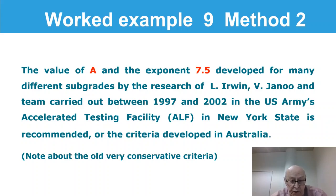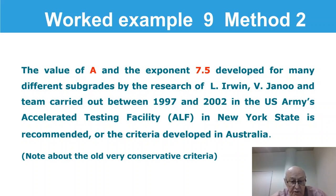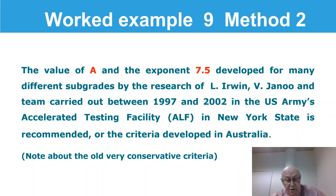The reason the AASHTO criteria is conservative is not difficult to understand. The road test took place in a part of America where the subgrade soil froze during the winter, and during the spring when it thawed, it became extremely weak. It was very difficult for the researchers to determine how that subgrade would perform without this winter freeze and spring thaw. The results were relatively conservative, and the ones we're now recommending are less conservative and quite accurate. We've been using them for a number of years now.